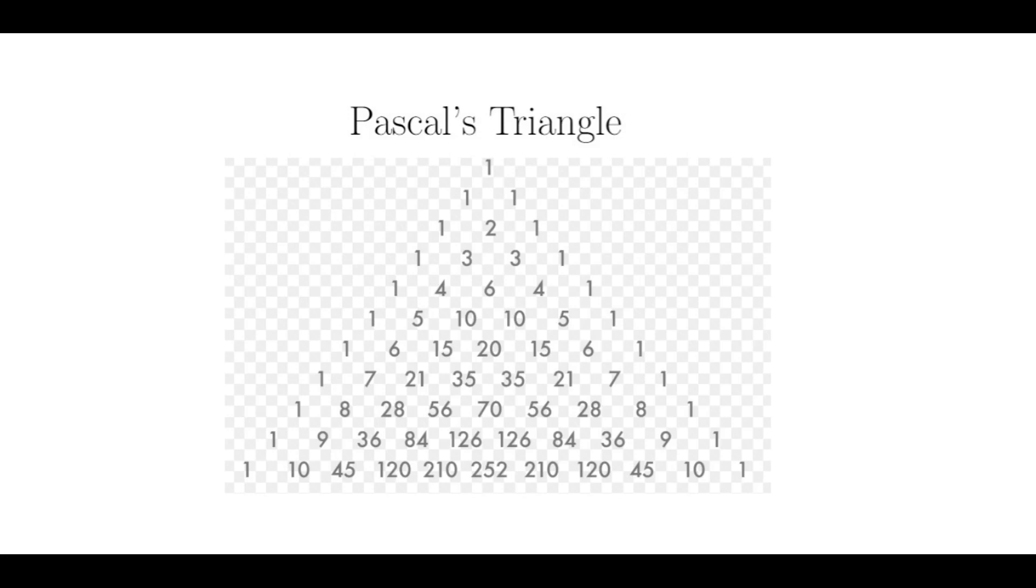There are a lot of hidden patterns in this triangle, and more are being discovered all the time, despite the fact it's been around since the mid-17th century and possibly earlier. One pattern you may recognize is that the rows are binomial coefficients, and each row sums to a power of two.